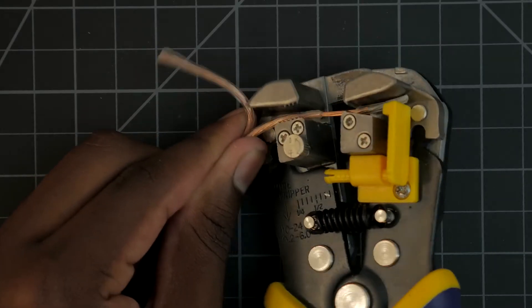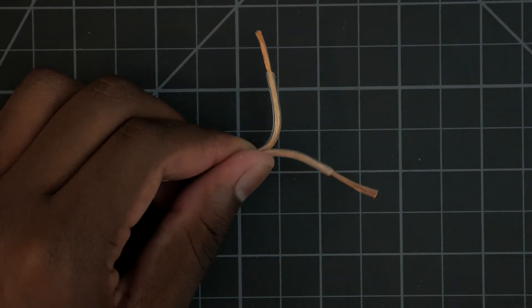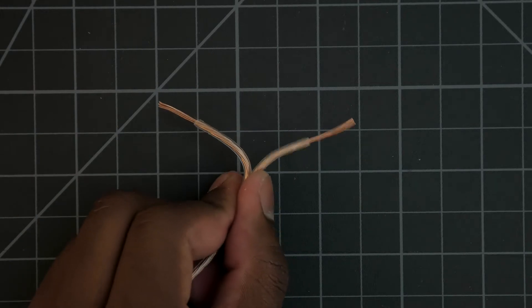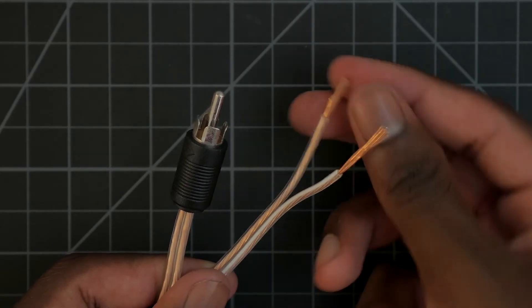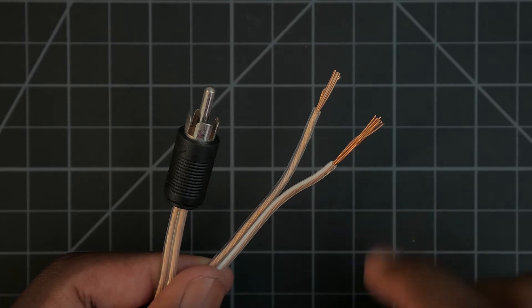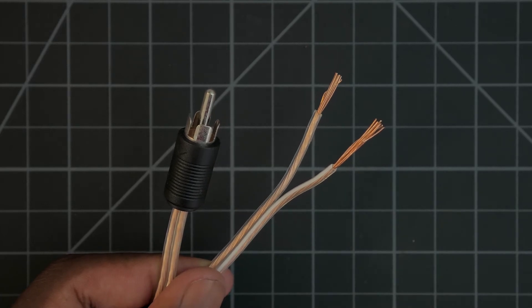Then take an RCA cable and strip the ends. You should get two wires, positive and negative. For me, the right wire is negative and it's denoted by this white line. And you're going to need two RCA cables by the way, one for the left channel and one for the right channel.